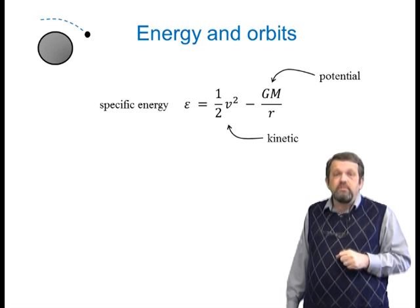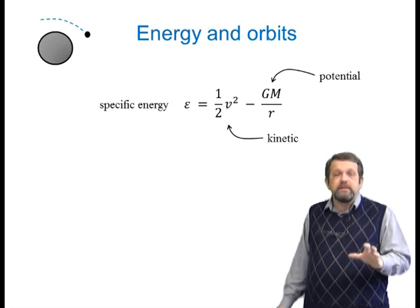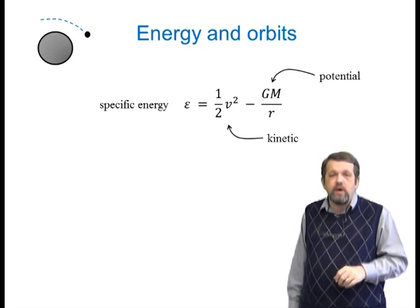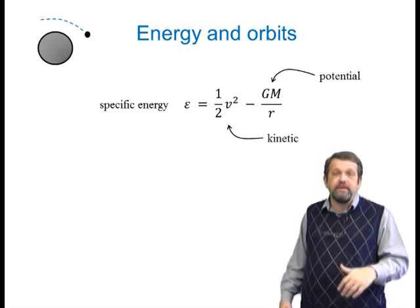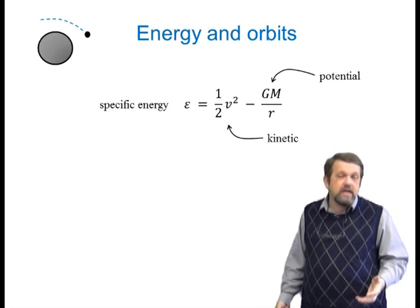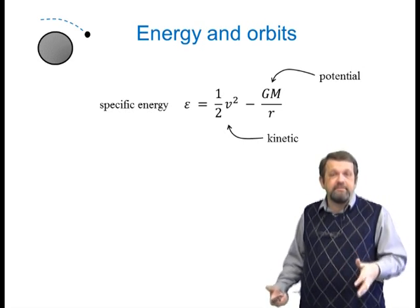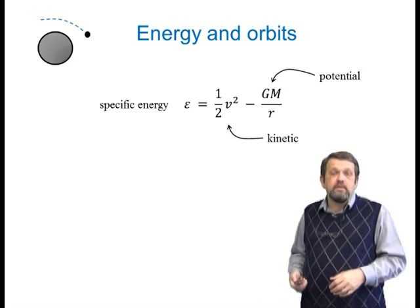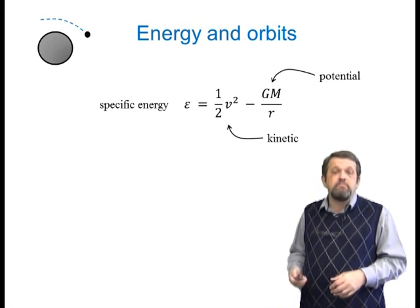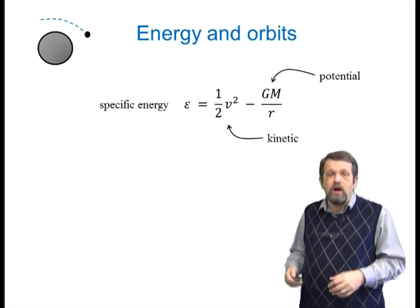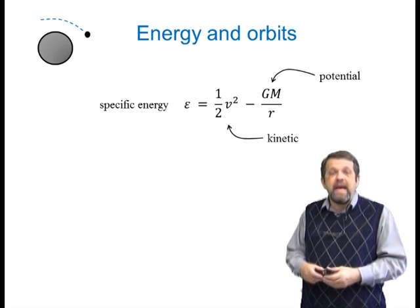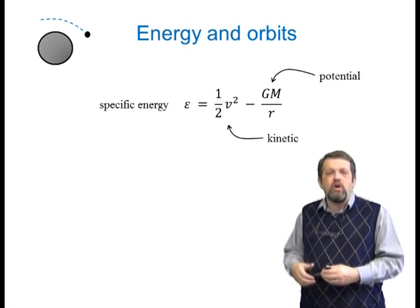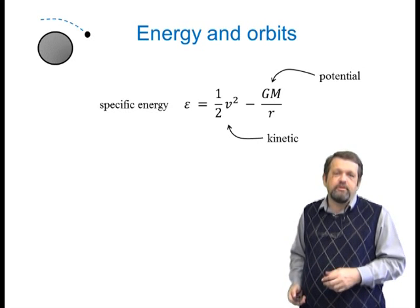Energy is a fundamental concept, and the specific energy of an orbit is a really useful quantity. It's the sum of the specific kinetic energy, which is one-half v squared, and the specific potential energy, which is minus GM over r, where M is the mass of the planet your satellite is moving around and r is your distance from the center.